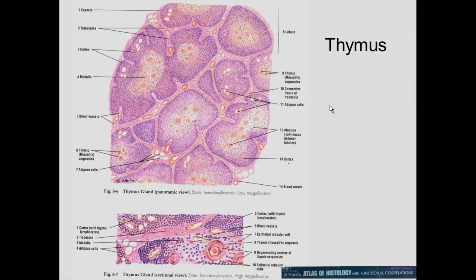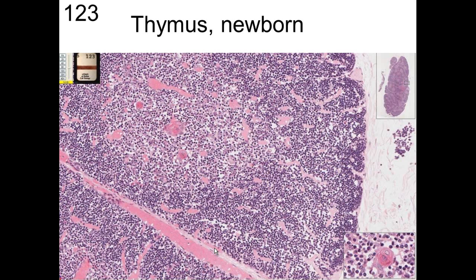One organ more prevalent in young individuals is the thymus. The thymus has different lobes, each with a cortex and a medulla. In the medulla you can see Hassall's corpuscles, which are concentric rings of material diagnostic for the thymus. In the thymus of a newborn we can see these different lobes, each with a cortex and a medulla.